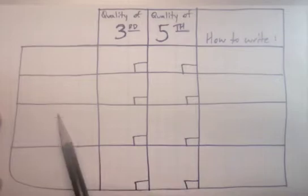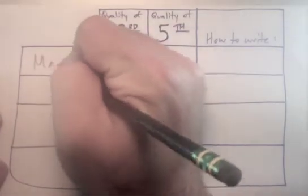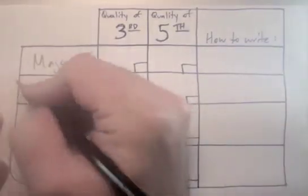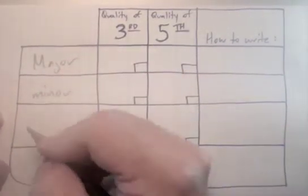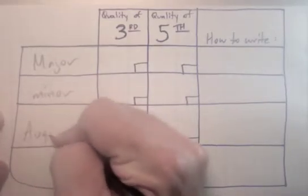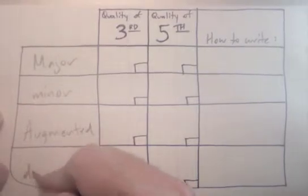So we're going to write down the four qualities of triads here. We have major, we have minor triads, we have augmented, and we have diminished triads.